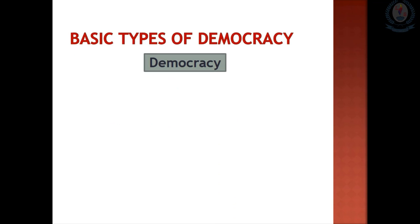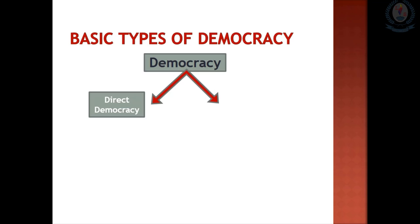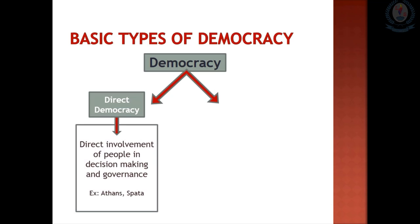Basic types of democracy: there are mainly two types. The first is direct democracy, where there is direct involvement of the people in decision making and governance. The main feature of direct democracy is the direct participation of the people in governing. The governance that existed in the Greek city states of Athens and Sparta were direct democracies.